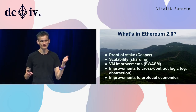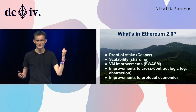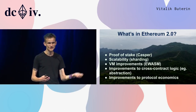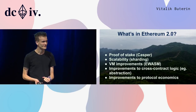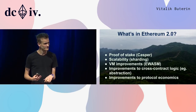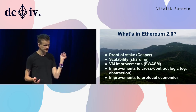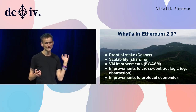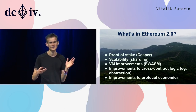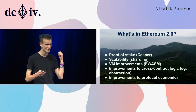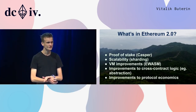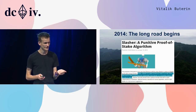These features include proof of stake, Casper, scalability, sharding, virtual machine improvements, ewasm, improvements to cross-shard contract logic, improvements to protocol economics, and really the list goes on and on — there is some power law distribution. Now how did we get here? The road to proof of stake actually started way back in 2014.